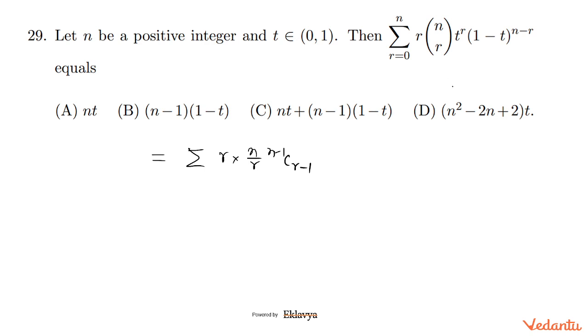Or you can use factorial - N factorial by R factorial times N minus R factorial. And T raised power R, 1 minus T whole raised power N minus R, R from... Now here the value at R equals zero was zero, so we can take R equal to 1, 1 to N.